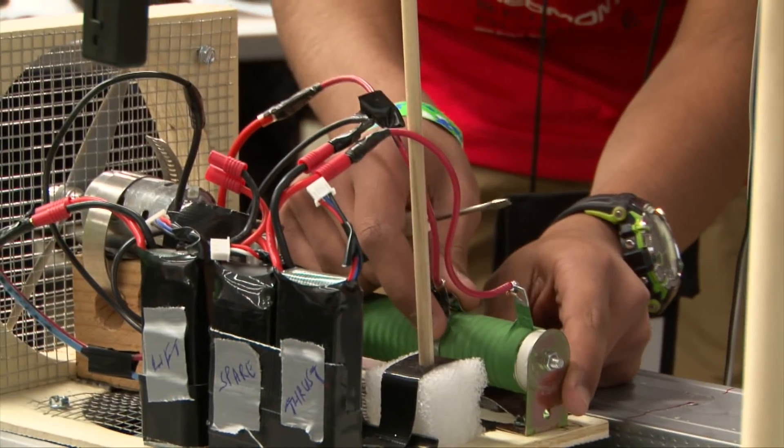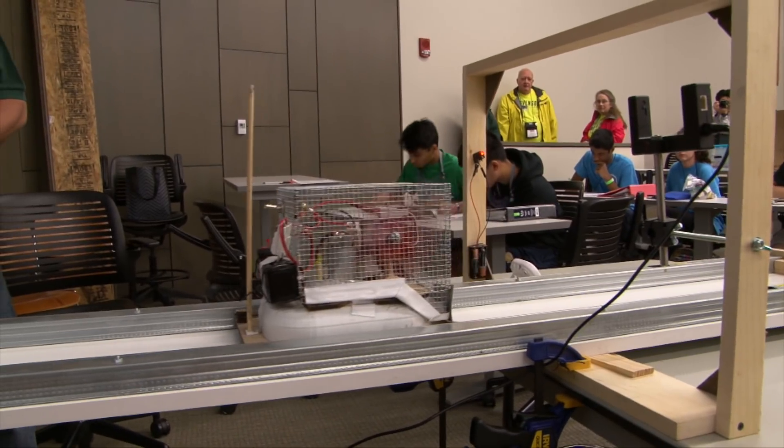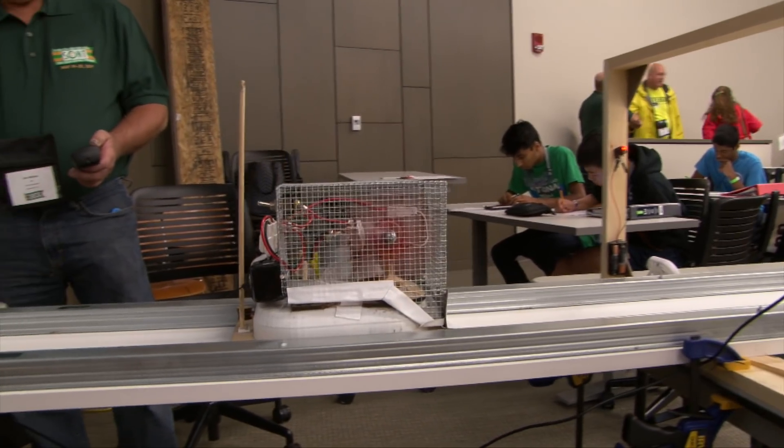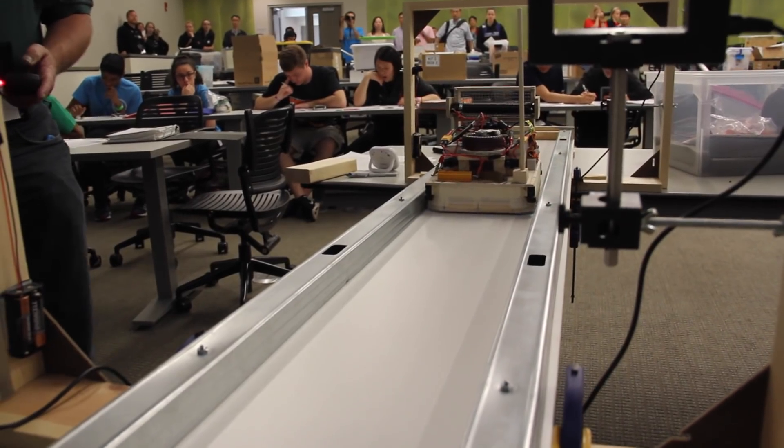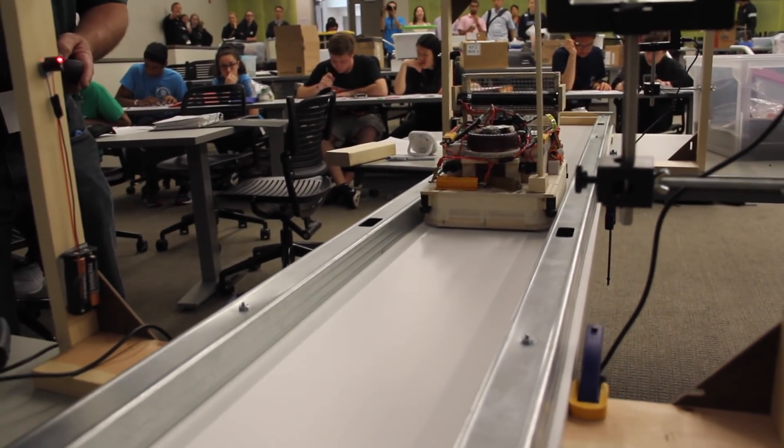For Division C, they have to adjust for both target time and length. So they have to be able to adjust their hovercraft on the fly during the eight-minute testing period, so it will run down the track as close to that target time as possible.